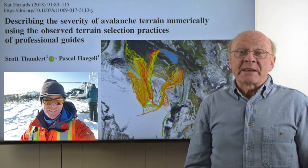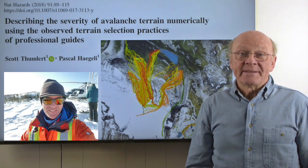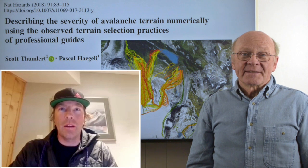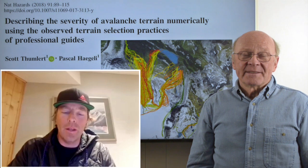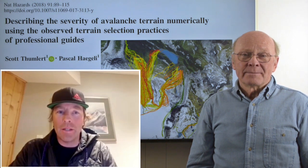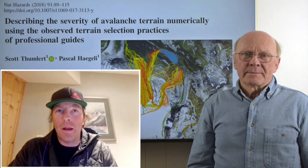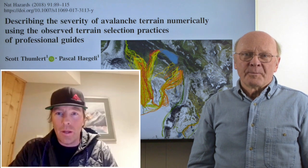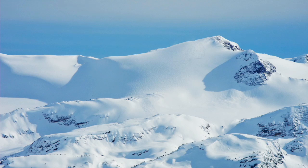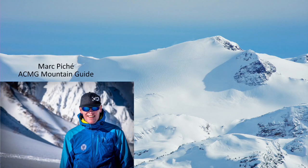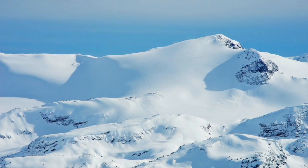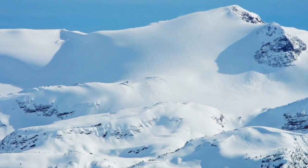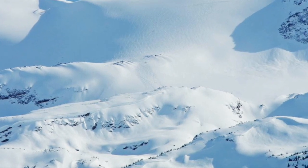By avoiding convexities, are ski guides also avoiding the steep slopes below them? Definitely. Slope steepness is the most important parameter that guides are avoiding when there is avalanche hazard in the snowpack, and subsequently they are also avoiding convexities. In a related conversation, a very experienced guide, Mark Pichet, noted that compared to steep planar slopes, convexities are easier to identify from a distance in flat light or from different angles. So there is a partial explanation for the different interpretation of convexities by ski guides and the research studies.